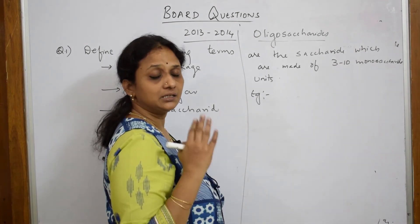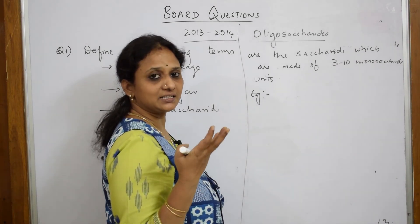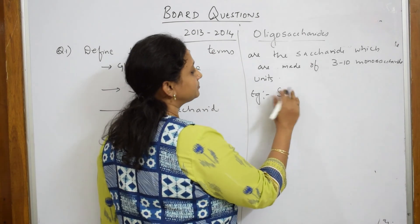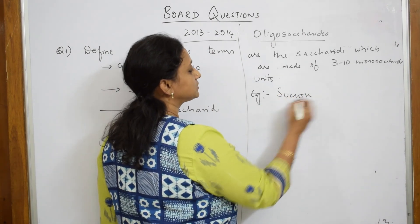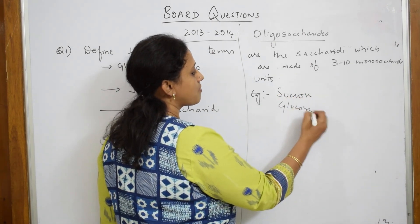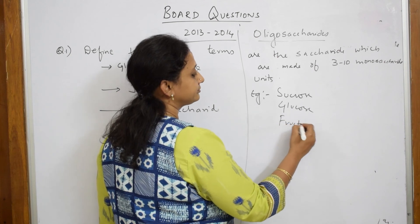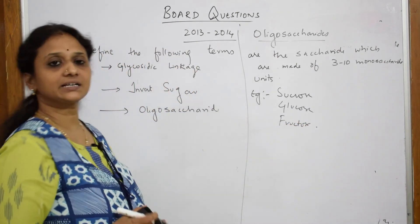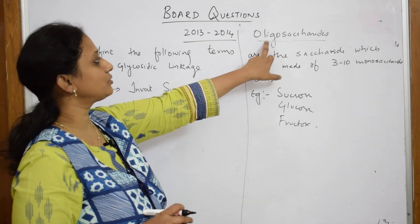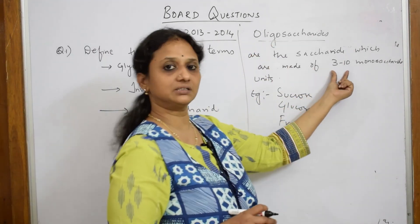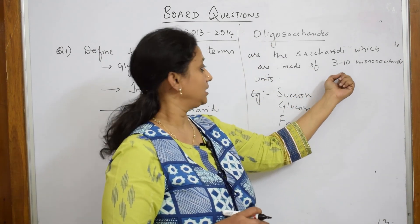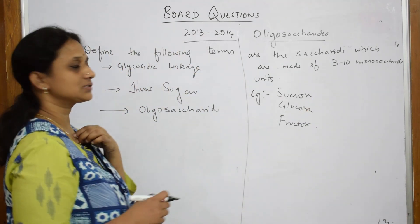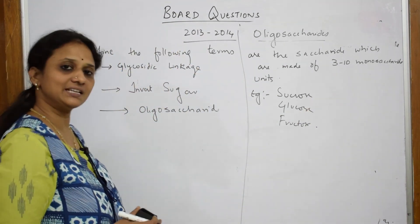Examples: they have been divided into monosaccharides, disaccharides, and polysaccharides. Examples of oligosaccharides include sucrose, glucose, fructose — you can list out whatever. This is your oligosaccharide definition. The keyword here is three to ten monosaccharide units. This is how you will answer. Let us meet in the next paper.